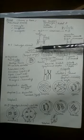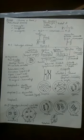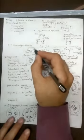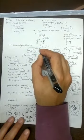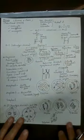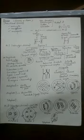Prophase I is divisible into five sub-stages. The first stage is called leptotene, also mentioned in some books as leptonema. 'Nema' means thread and 'tene' means ribbon — so leptonema and leptotene mean the same thing. Similarly, zygonema and zygotene, pachynema and pachytene, and diplonema and diplotene are interchangeable terms.